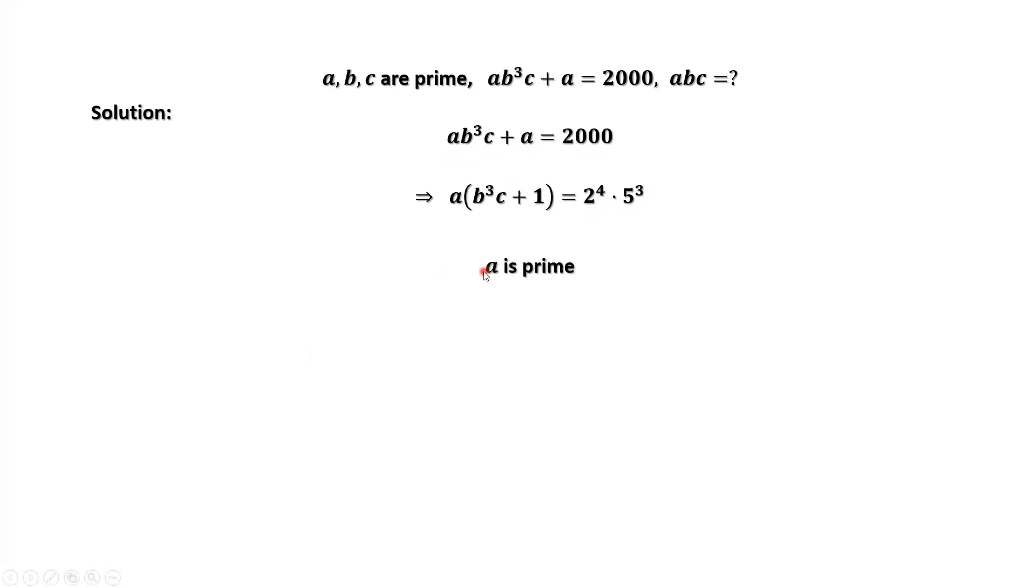Because A is a prime, this implies two possible values for A: A equals 2 or A equals 5.